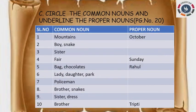Next exercise is C: circle the common nouns and underline the proper nouns, given on page number 20. I have made it into a tabular column — common nouns on the left side and proper nouns on the right side for each question. Check out the answers.